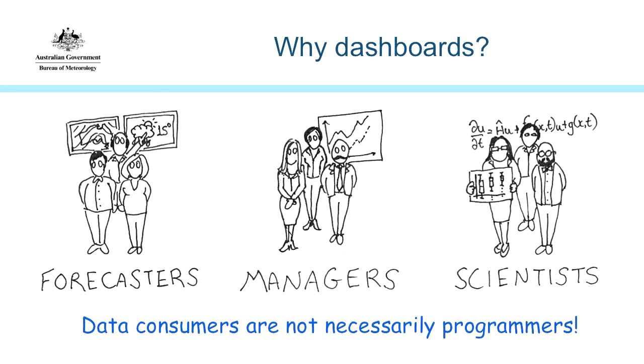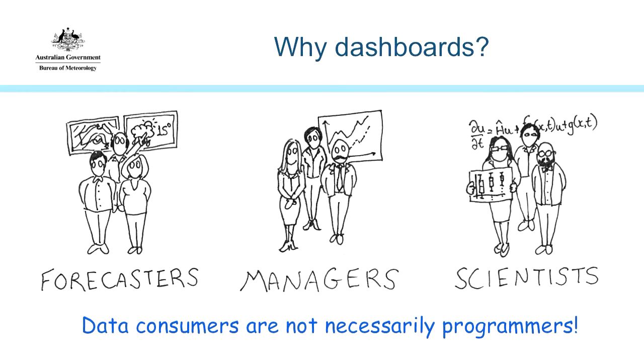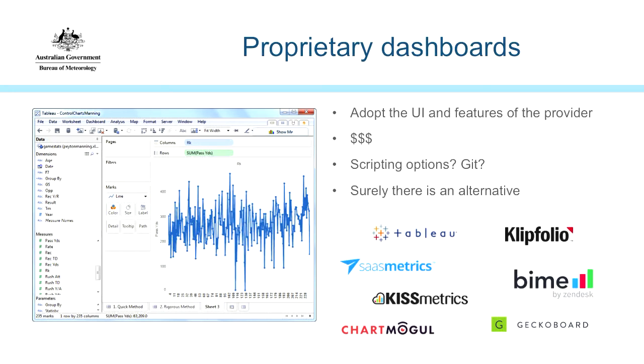Who do we share our results to? We have forecasters, managers, scientists — people who generally aren't interested in our code, and sometimes we just want to hide all the dirty laundry away. The people who want to see the results aren't necessarily programmers. This is not a new problem — outside of the data science world, dashboards in software-as-a-service have existed for a long time. Some of you may have had the displeasure of working with Tableau. If you want to use one of these you'll have to pay money and use their UI and data formats. And scientists tend to be quite unique in what data they have. So Jupyter dashboards is our savior.